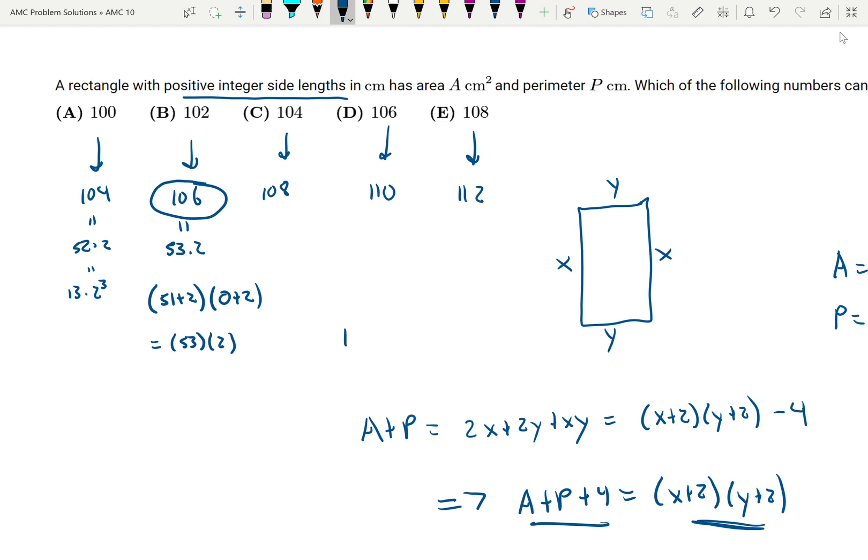And therefore 102 would never equal A plus P.